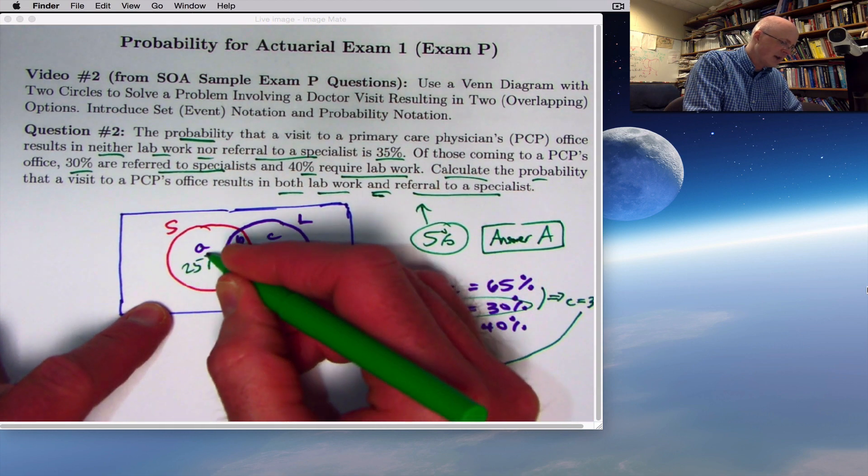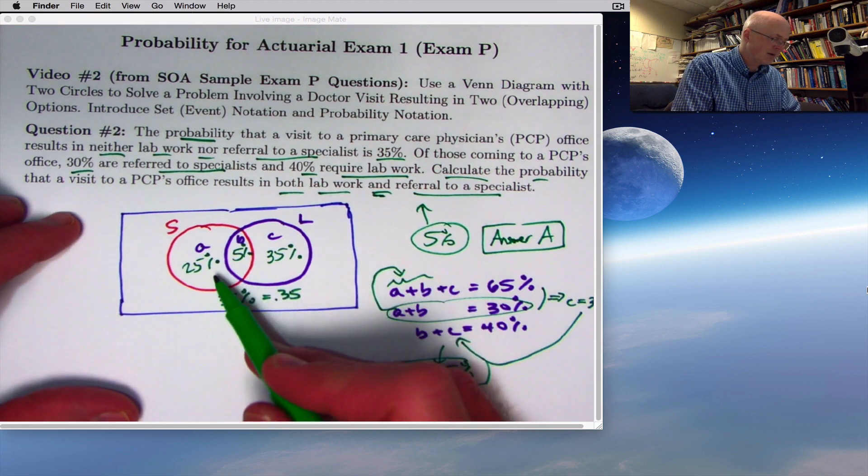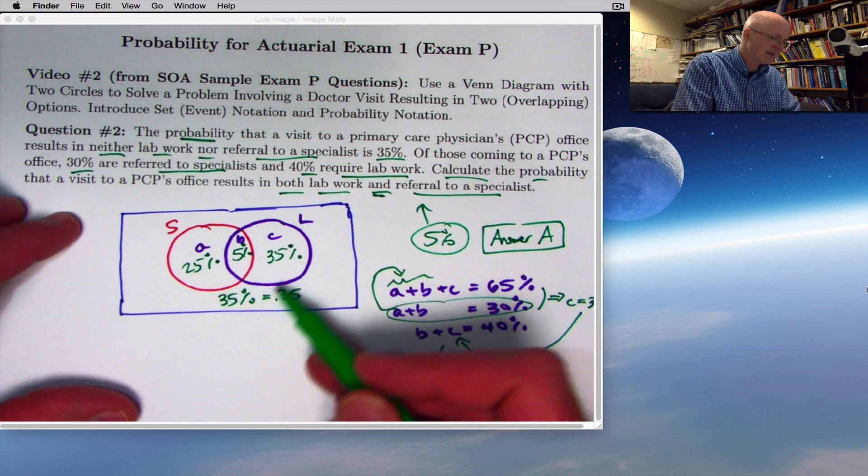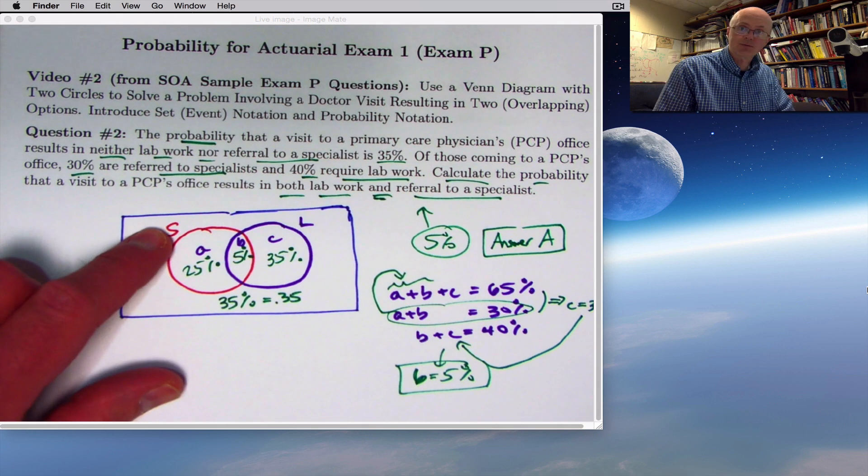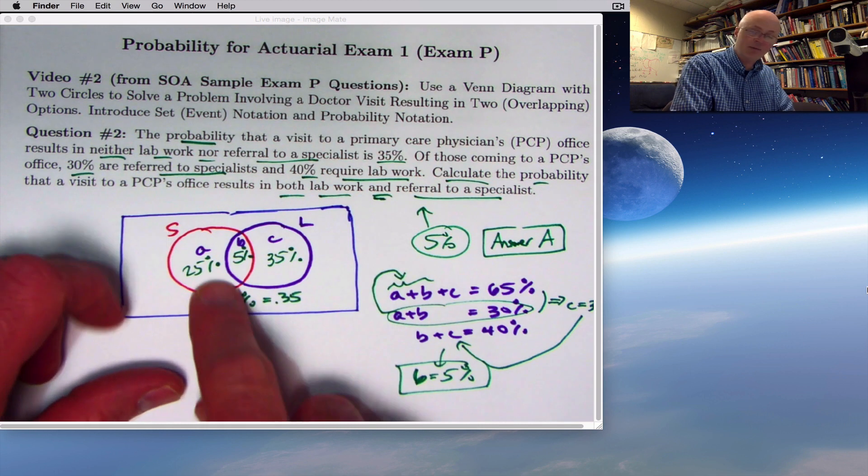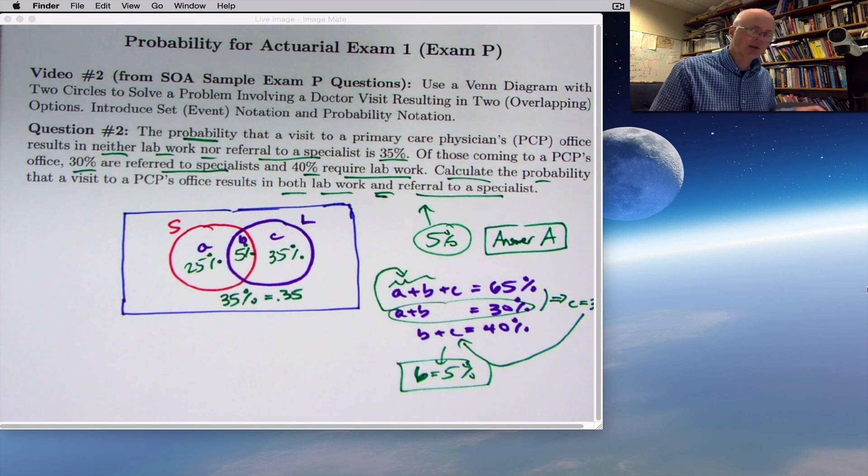If you wanted to figure out A and see if everything was consistent, you could plug that back in. A plus 5 must be 30, so A must be 25. Then you could double check that these numbers do all add up to 100%. 25 plus 5 is 30, plus another 70 is 100%. That could also help you answer other questions, like what is the probability that somebody has a referral to a specialist but not lab work done. That would be 25%.